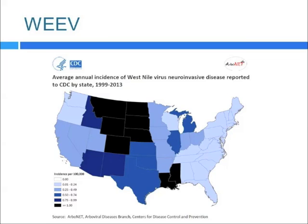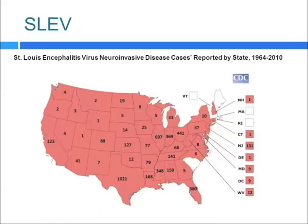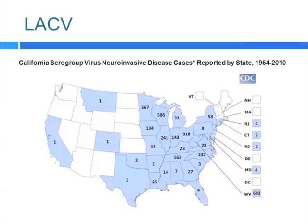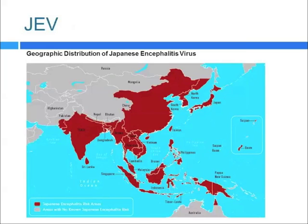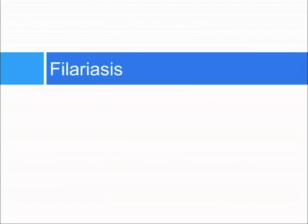Regionally, Western encephalitis is west of the Mississippi. St. Louis encephalitis is found pretty much throughout, more concentrated in the southern states of Texas and Florida. La Crosse virus is east of the Mississippi, Eastern equine encephalitis also east of the Mississippi, and Japanese encephalitis in Southeast Asia.